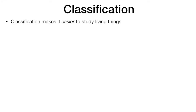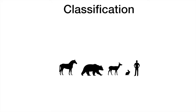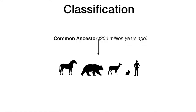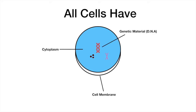We classify things to make it easier to study them. Us mammals all originated from the same common ancestor, which is why all mammals have similar body structures that work in similar ways. It's good to know that all living cells have a cytoplasm, a cell membrane, DNA which is genetic material, ribosomes and enzymes.